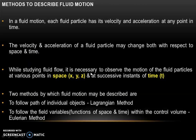Hence, while studying fluid flow, it is necessary to observe the motion of the fluid particles at various points in space — that is x, y and z direction — and at successive instants of time t. There are two methods by which fluid motion can be described. First one is the Lagrangian method and second is the Eulerian method. In the Lagrangian method, the path of the individual particle or object is followed. In the Eulerian method, the field variables are followed within the control volume, and these field variables are functions of space and time.